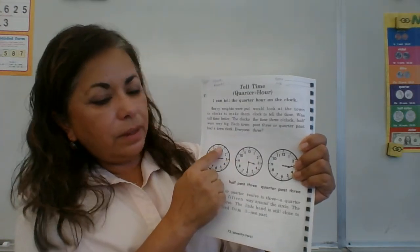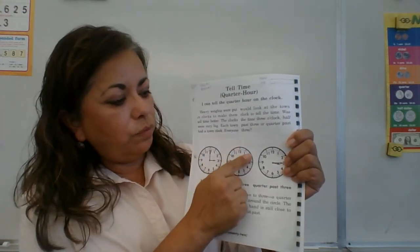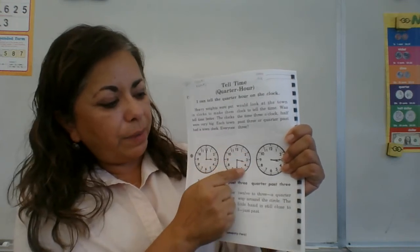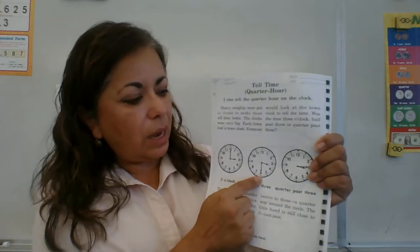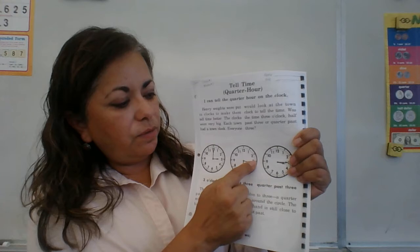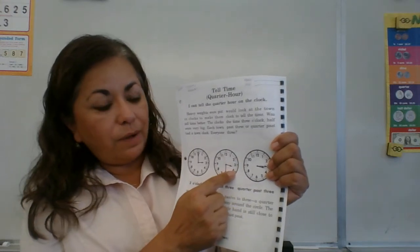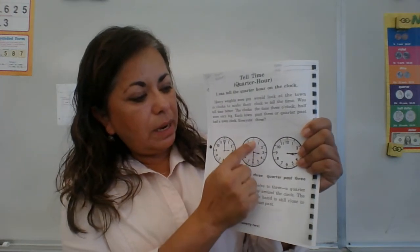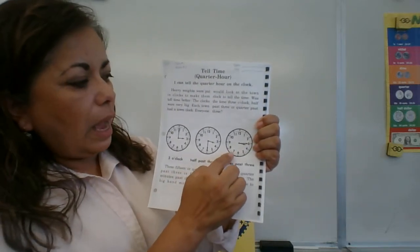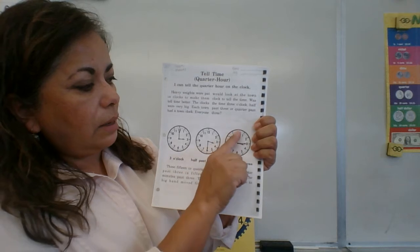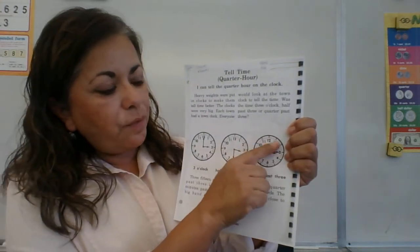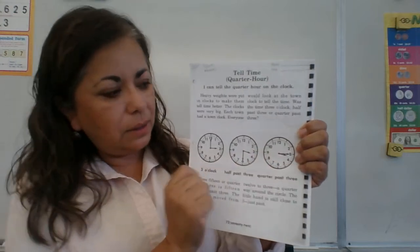The big hand tells us the minutes. When it's straight up, it's three o'clock. When the big hand moves to straight down to the bottom, it's half past, or 30 minutes past the hour. The little hand is moving from the three to the four, but it's not four o'clock until the minute hand goes all the way around.